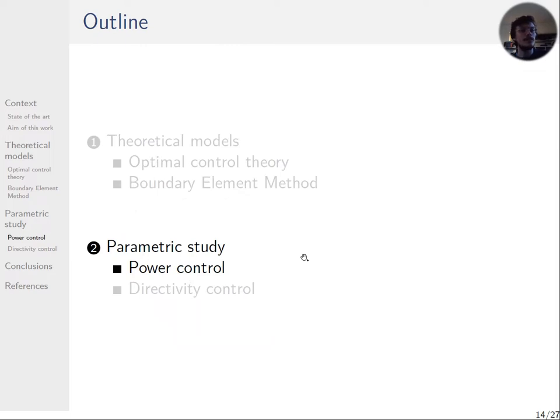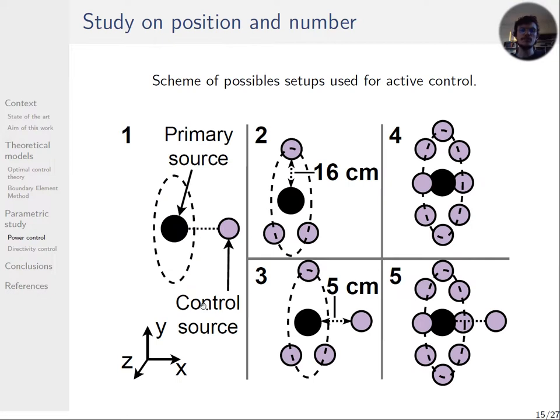Let's now have a look at the optimization of the power control. To do so, five cases are studied. Case 1: one control source is at 5 cm in front of the primary source. Case 2: three sources are at 16 cm from the primary one equidistant on a ring. Case 3 is the combination of case 1 and case 2. Case 4: similar to case 2, but with 8 sources on the ring. And finally, case 5 corresponds to case 1 plus case 4.